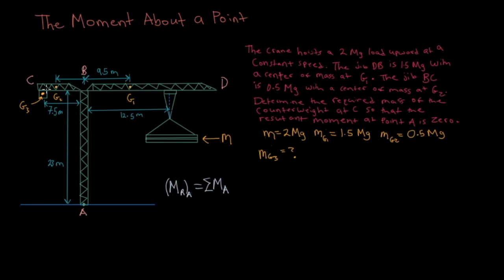Then over on the left side we have another jib which we'll call BC. It has its own mass and it acts through g2, and then over here at g3 there's a counterweight.